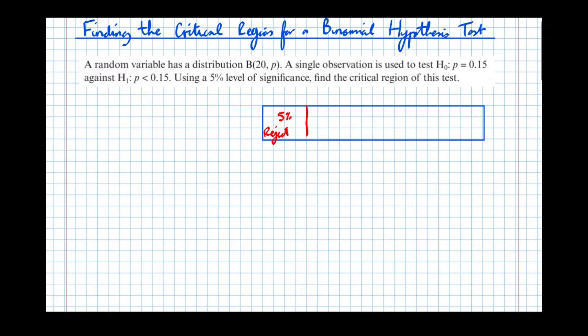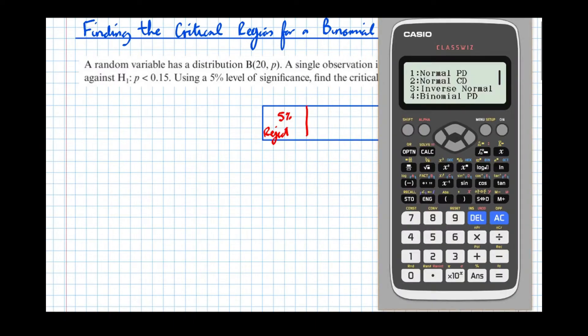Now the calculator has quite a useful function to allow us to do this. We're going to distribution mode and binomial cumulative. But this time, rather than use variable, which we've used up until now, we're going to use the list function. If we're testing to the left, let's start with the lowest observations we can get first. We're going to have x equals 0, 1, 2, 3, 4, 5, and keep going until you get bored.